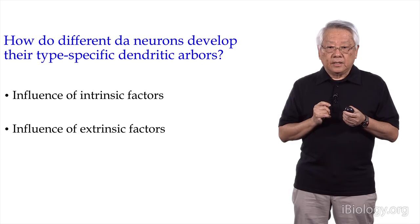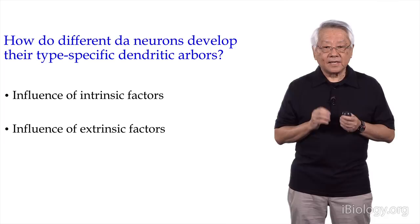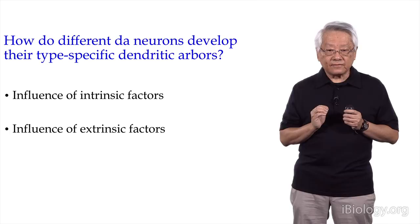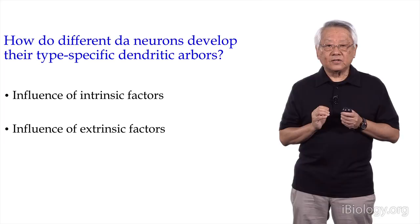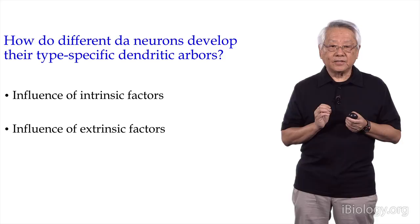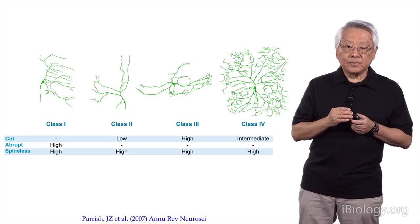Like any complicated biological process, dendrite morphogenesis is regulated by both intrinsic factors and extrinsic factors. For the intrinsic factors, several transcription factors have been found to have an important role in controlling dendrite morphogenesis. I'll give you one example about the function of a gene called CUT, which I think is informative.